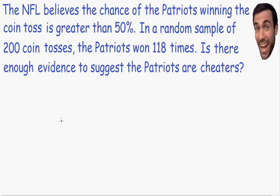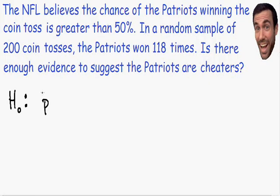Let's start with our null hypothesis, H naught. The null hypothesis is always what is currently believed to be true. We have to assume that the New England Patriots are innocent — innocent until proven guilty. If they are indeed innocent, we know that the chance of winning a fair coin toss is 50%. So the null hypothesis is that the proportion that the New England Patriots win a coin toss is equal to 50%. The null hypothesis is always written with an equal sign.